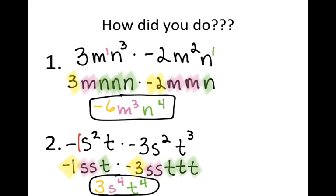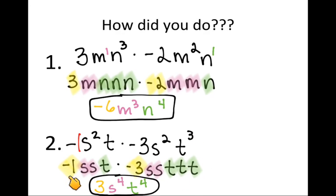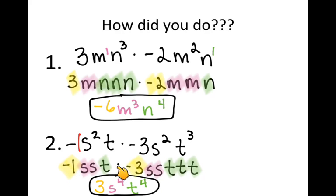For the second problem: negative 1 s squared t times negative 3 s squared t cubed. Expanding: (−1) × s × s × t × (−3) × s × s × t × t × t. Coefficients: (−1) × (−3) = positive 3. Count s's: 4, so s to the 4th. Count t's: 4, so t to the 4th. Answer: 3s to the 4th t to the 4th.